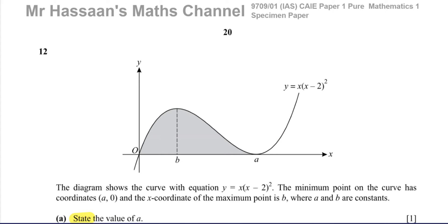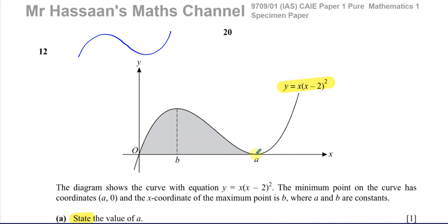If we look at this equation, we can see this is a cubic equation. The highest power will be x cubed if you expand the bracket, and the x cubed term will be positive, so it's definitely going to have this type of shape. Normally to find the turning points, of which A is the x-coordinate of one, you differentiate the equation and equate it to 0, where the gradient is 0.